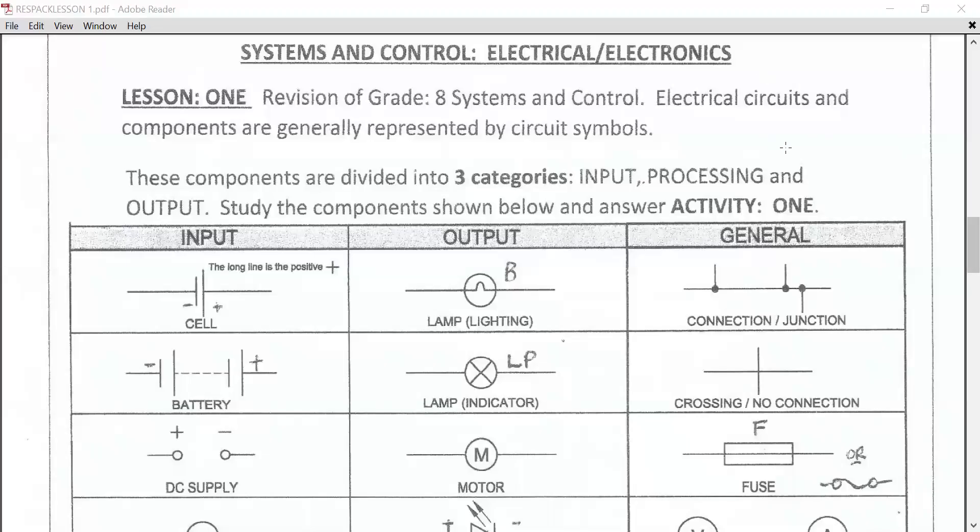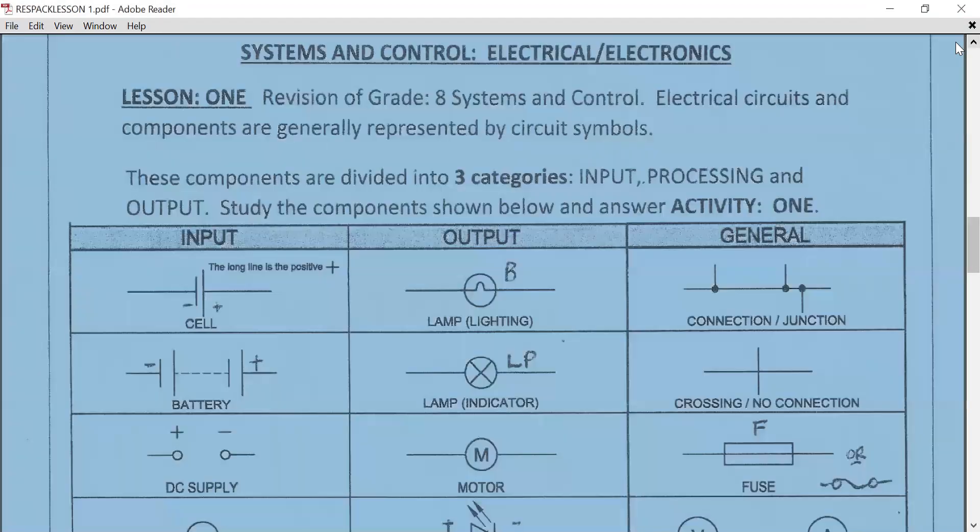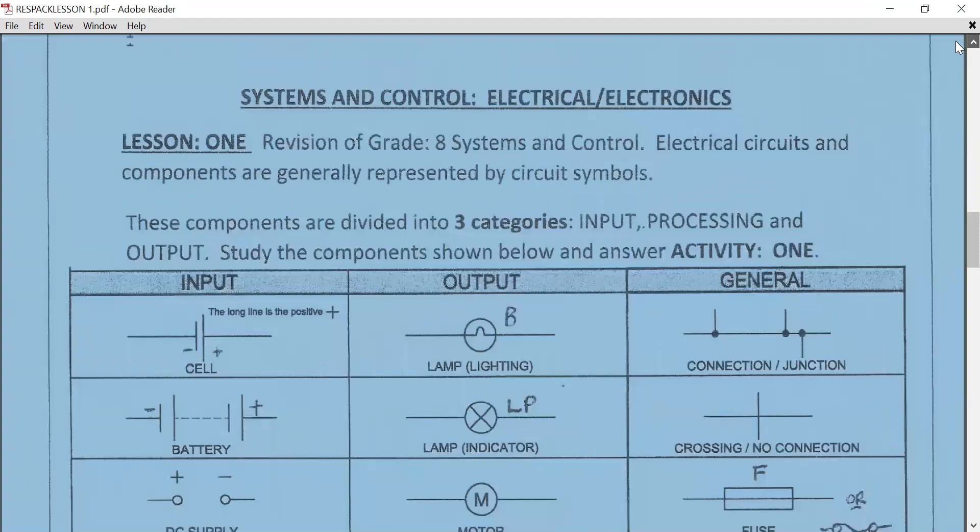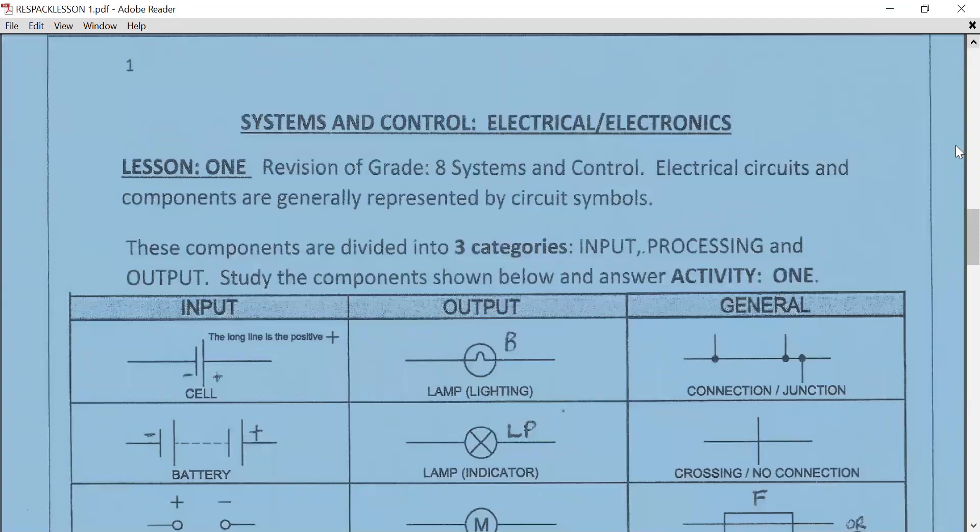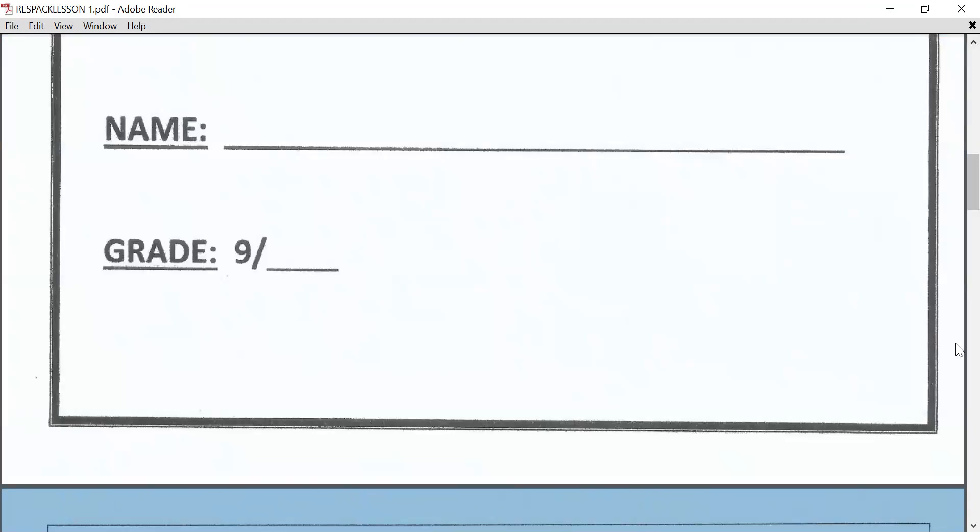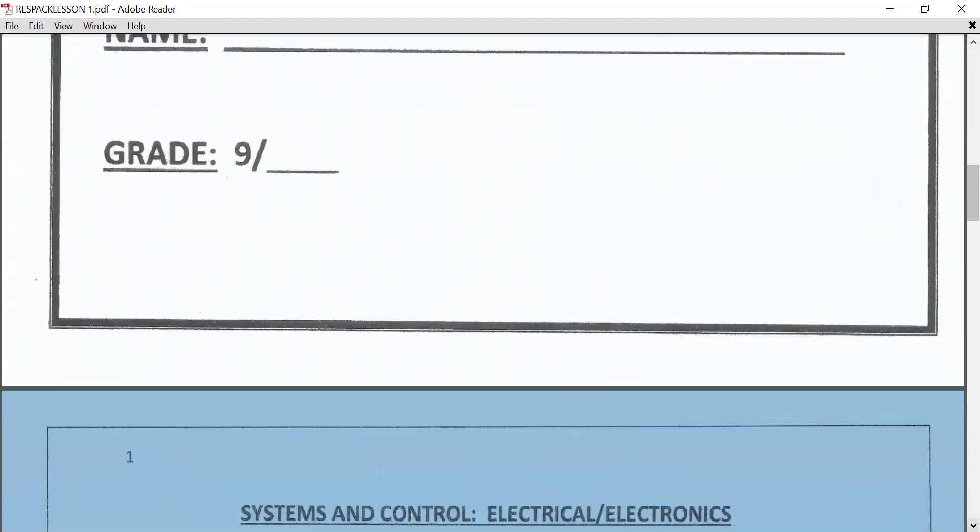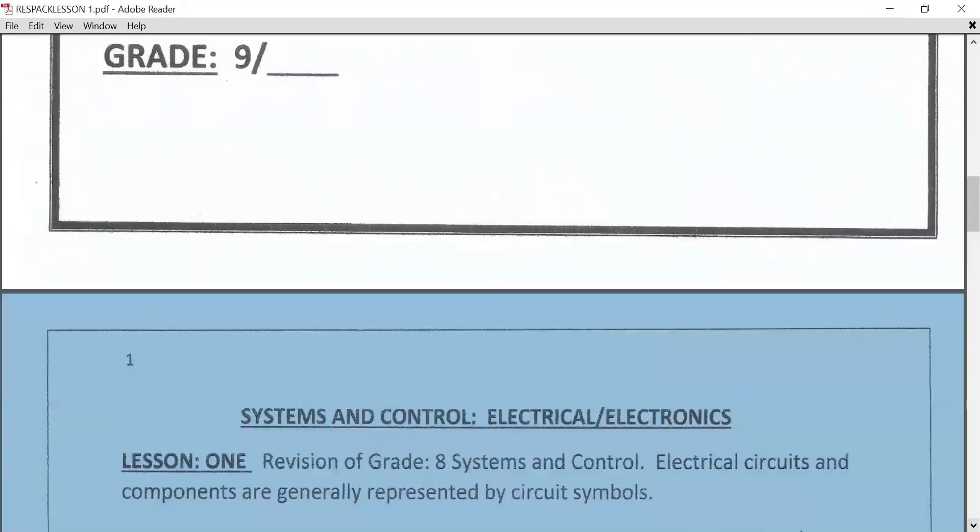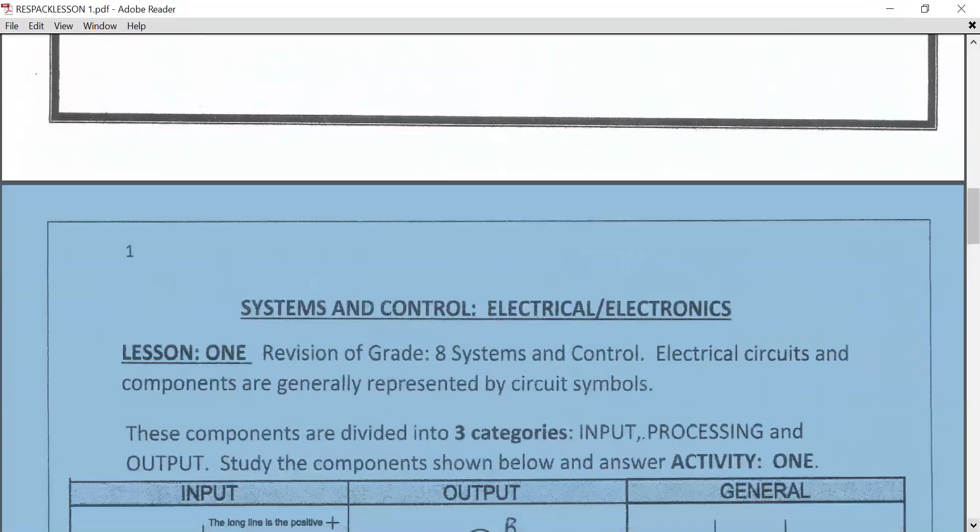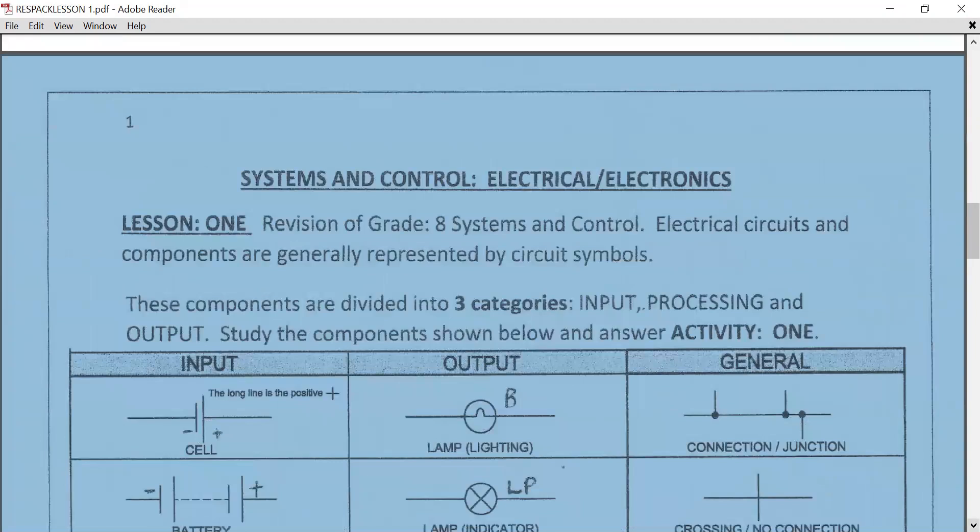Good day learners, we're going to be starting with technology. It will be the first part of your power pack. Our section is systems and control regarding electricity and electronics. Now let's have a look at the first worksheet. It's lesson one, revision from grade 8. Systems and controls: electrical circuits and components are generally represented by circuit symbols.